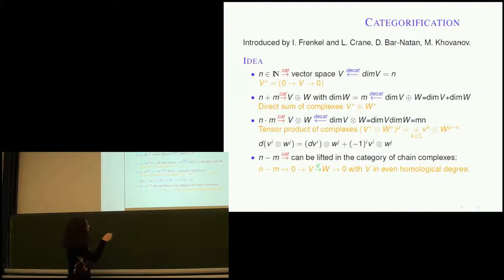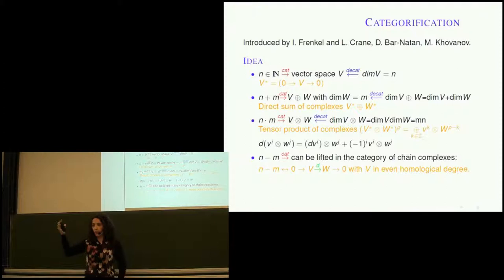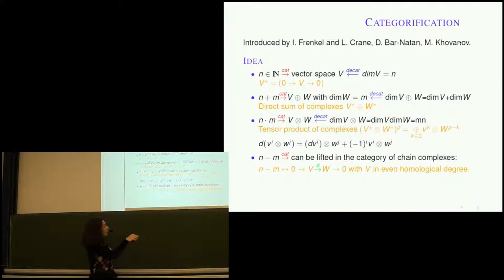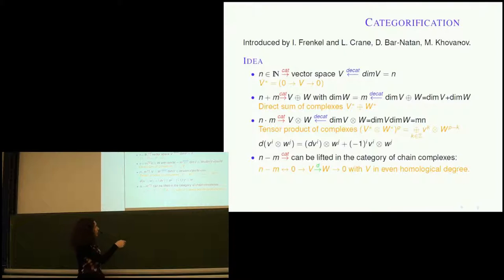The direct sum of chain complexes is what you'd expect: you take direct sums of spaces and the maps act on their domains. The tensor product is slightly more complicated — whatever is in degree P comes from adding up spaces from constituent chain complexes whose degrees add up to P. Then you define the differential by taking the derivative of the first, tensored with the second, with some sign issues. That should square to zero.